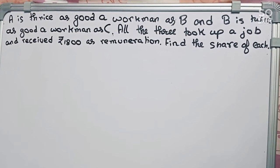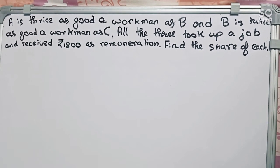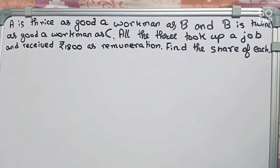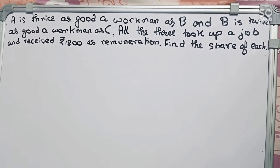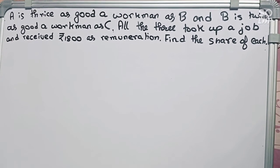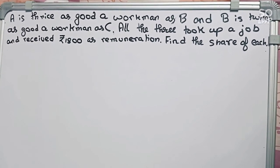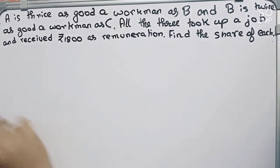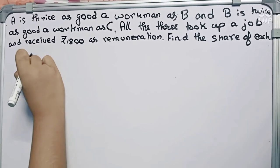Hello guys, welcome to this video. In this video our question is: A is thrice as good a workman as B, and B is twice as good a workman as C. All three took up a job and received rupees 1800 as remuneration. Find the share of each. So let's start. First, we will find the ratio of both the team.